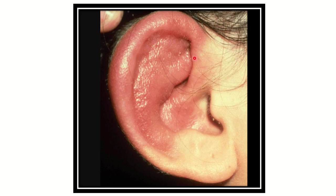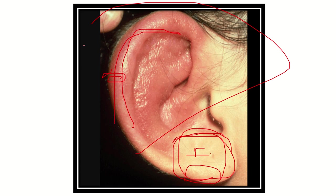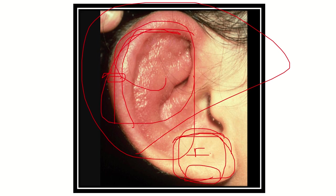First, we can see the external ear, also known as the pinna. The upper part of the pinna contains cartilage, but the lower part — known as the lobule of the ear — contains no cartilage, only fibrofatty tissue. Any infection in this area causes pressure between the skin and the cartilage, resulting in very severe pain.